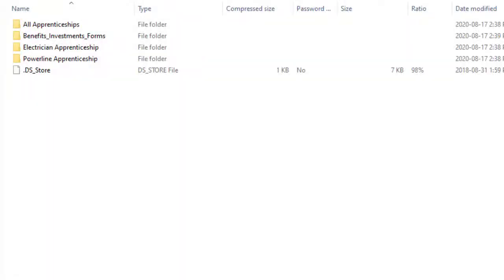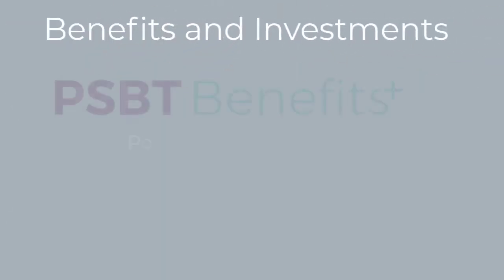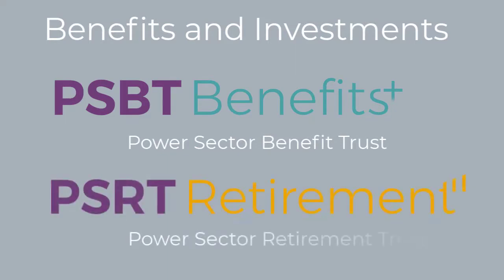Applicant apprentices will need to complete the paperwork for all apprenticeships, benefits and retirement, and the documents in the folder pertaining to their apprenticeship. For your reference, the benefits and investments are through the Power Sector Benefit Trust and Power Sector Retirement Trust.